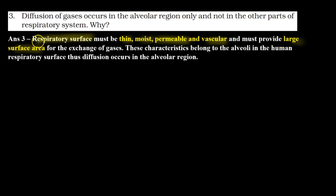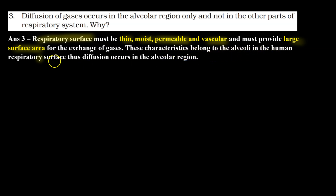The answer to question 3 is: the respiratory surface must be thin, moist, permeable, and vascular, and must provide a large surface area for the exchange of gases. These characteristics belong to the alveoli in the human respiratory system. Thus, diffusion occurs in the alveolar region.